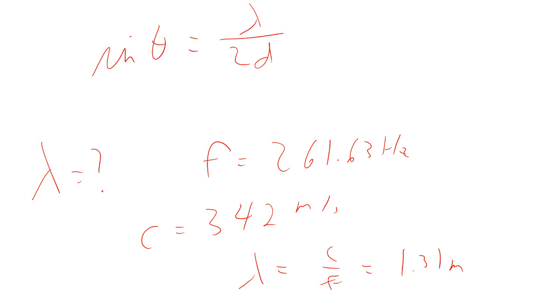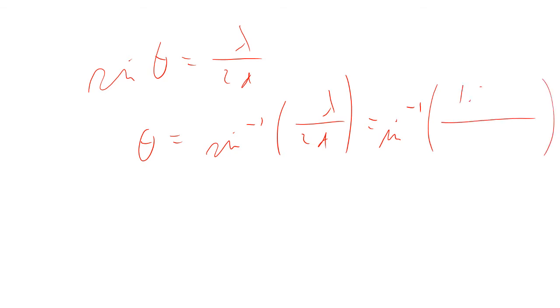And so now we just need to figure out what is theta. So sine theta equals lambda over 2d, so that would mean that the angle at which you don't hear anything would be the inverse sine lambda over 2d. So that would be the inverse sine of 1.31 meters divided by 2 times 2.5 meters. And so that angle at which it becomes quiet is 15.2 degrees off.